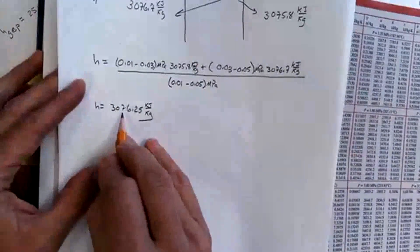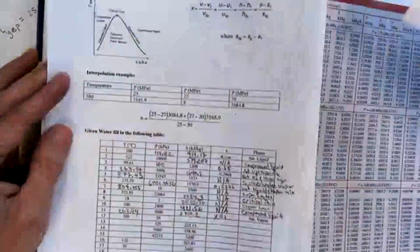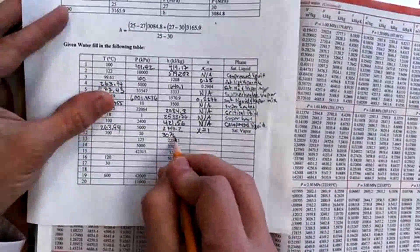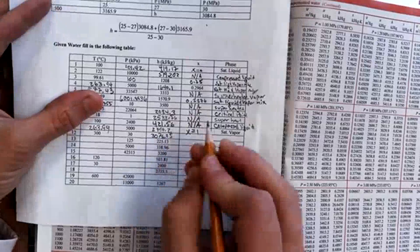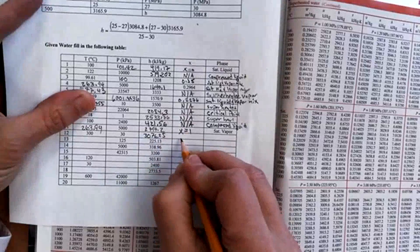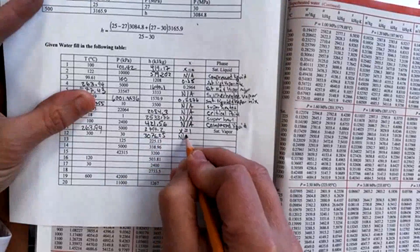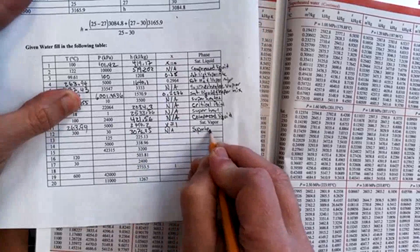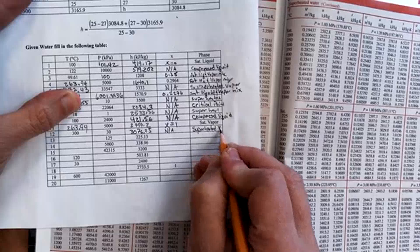And I got a value of 3076.25. So I'll write that down. That's my H value, 3076.25. I know that I'm superheated, so the quality is not applicable because it doesn't make any sense. And the phase is superheated vapor.